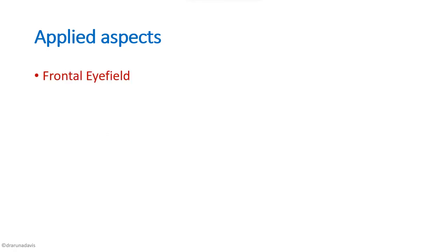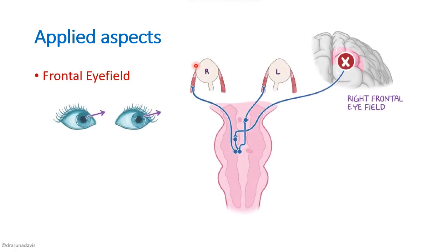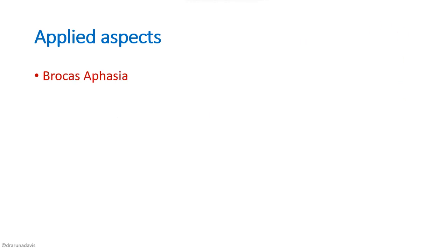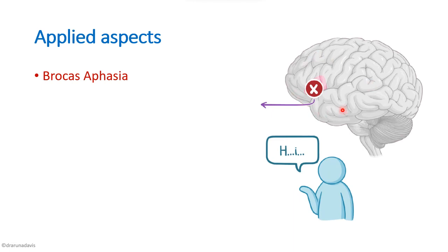A lesion in the frontal eye field causes the eyes to turn toward the affected side and conjugate movements of the eye will be absent. A lesion in Broca's area is called Broca's aphasia — a motor aphasia where the person can understand speech but cannot articulate it, also called non-fluent aphasia.